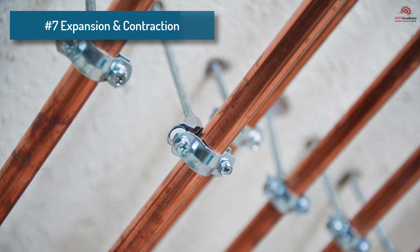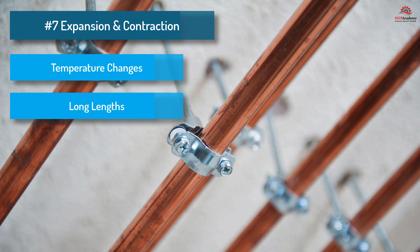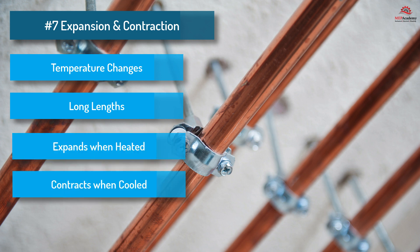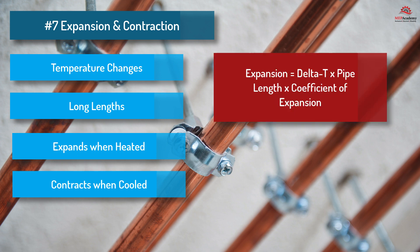7. Expansion and contraction. The refrigerant piping should be designed to accommodate the expansion and contraction of the piping due to temperature changes. Long lengths of piping can cause problems when temperatures vary, as the piping length will grow when heated and contract when cooling down. Some method of compensating for this expansion and contraction must be considered. Copper piping expansion equals delta temperature in piping times piping length times coefficient of expansion.